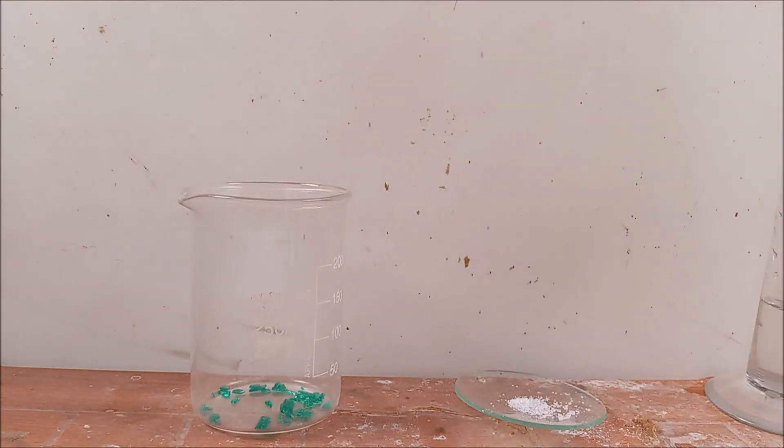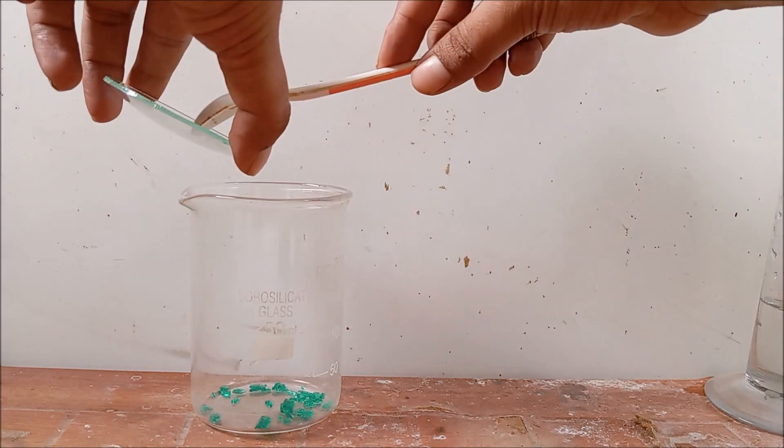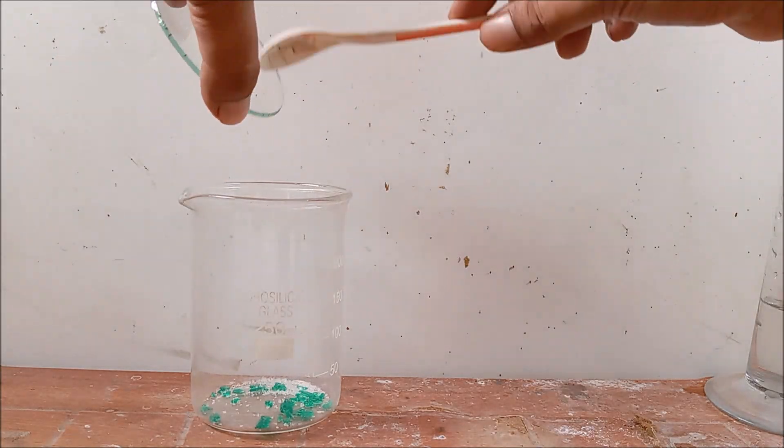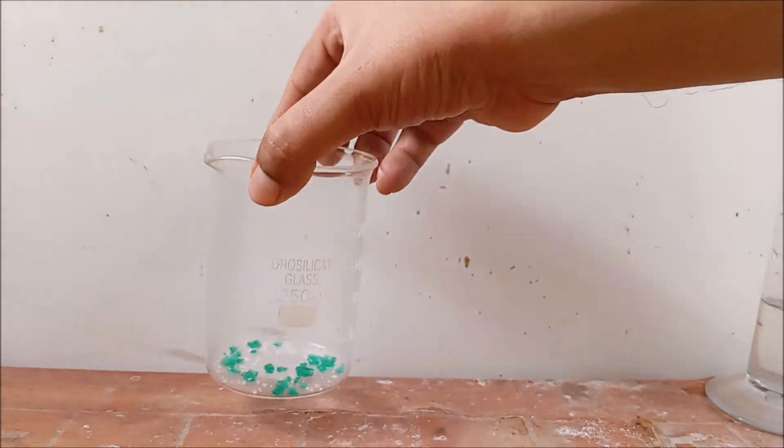Here I have taken 1.3 gram of nickel sulfate heptahydrate in a beaker. Add 0.6 gram of ammonium sulfate to this. Dissolve this in about 25 milliliters of water.